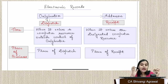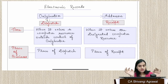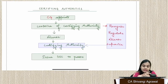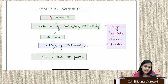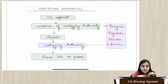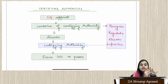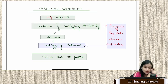Time and place of dispatch and receipt become important when enforcing contracts. Under the IT Act, we also have certifying authorities. The central government appoints the CCA — Controller of Certifying Authorities — and the CCA gives licenses to CAs (certifying authorities). Certifying authorities issue DSCs (digital signature certificates) to individuals. The CCA recognizes, regulates, licenses, and supervises certifying authorities.